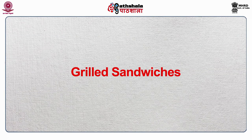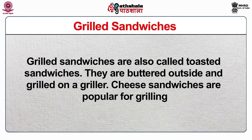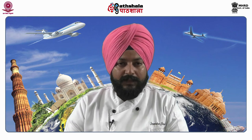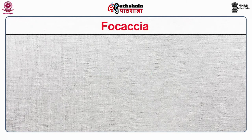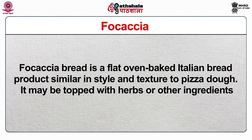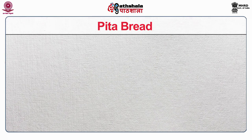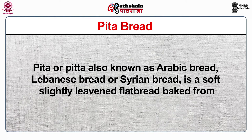Grilled sandwiches, also called toasted sandwiches, are buttered on the outside and grilled on a griller; cheese sandwiches are popular for grilling. Deep fried sandwiches are made by dipping sandwiches in beaten egg and sometimes breadcrumbs before deep frying. Filled rolls include focaccia or pita bread — flavoured bread served with dips like quesadillas and burritos. Focaccia is a flat oven-baked Italian bread similar in style to pizza dough. Pita, also known as Arabic, Lebanese or Syrian bread, is a soft slightly leavened flatbread originating in the Near East around 2500 BC.